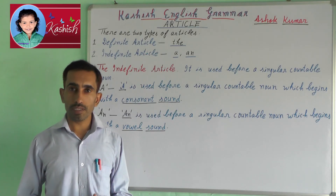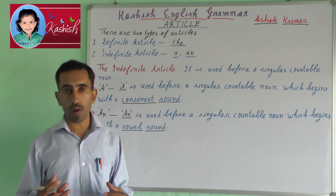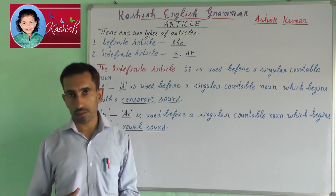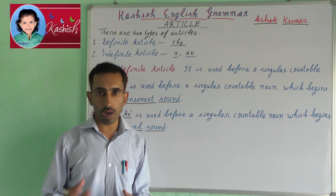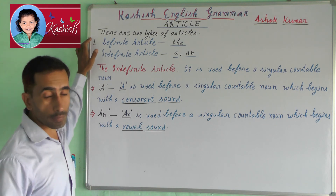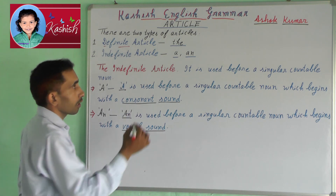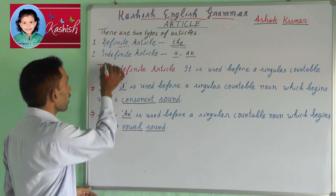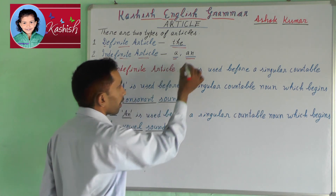Welcome to Kashi's English Grammar Lesson. Now we will learn about Articles. What are Articles? Articles are words which are used before nouns. There are two types of Articles: the definite article – THE, and the indefinite article – A and AN.